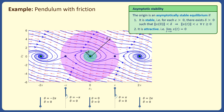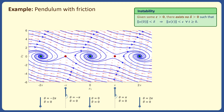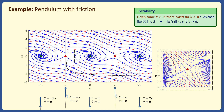It can be shown that the other two equilibria at x1 equals minus pi and pi are unstable. See the instability definition from the previous lectures and a more detailed phase portrait around the equilibrium at x1 equals minus pi, and try to prove this equilibrium is unstable.